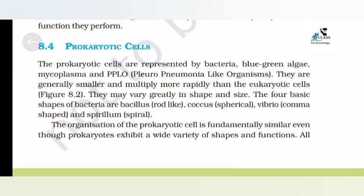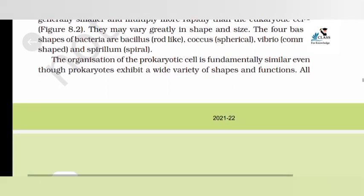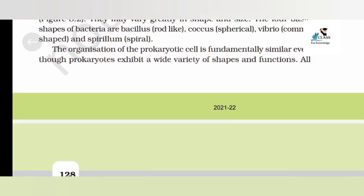The four basic shapes of bacteria are: bacillus (rod-like), coccus (spherical), vibrio (comma-shaped), and spirillum. The organization of the prokaryotic cell is fundamentally similar even though prokaryotes exhibit a wide variety of shape and function.